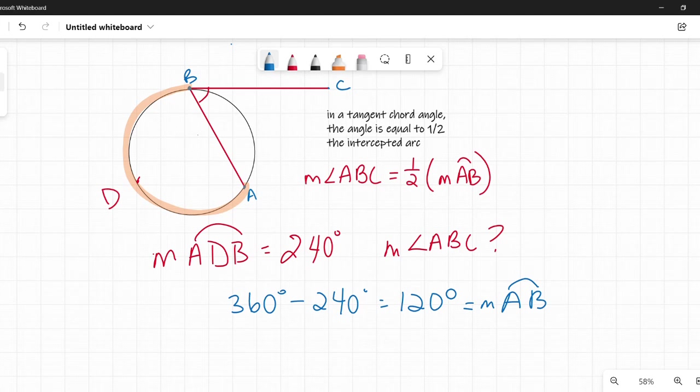Then I can go back to using my one-half of the intercepted arc. One-half of 120 is 60. So the measure of angle ABC here would be 60 degrees.